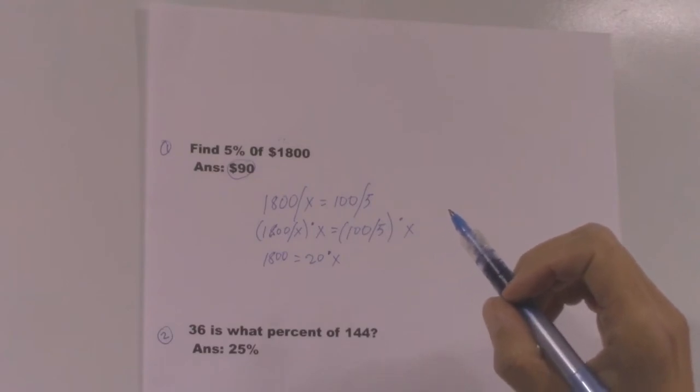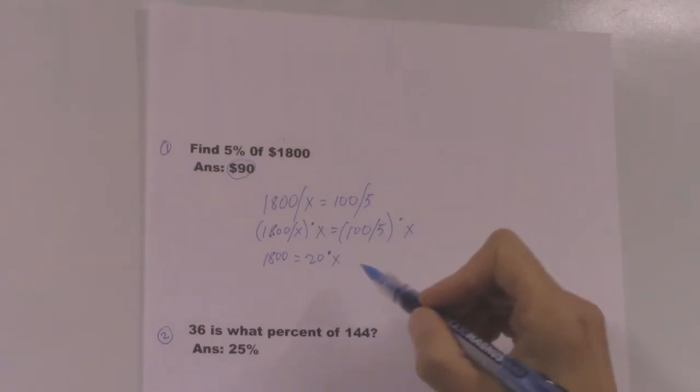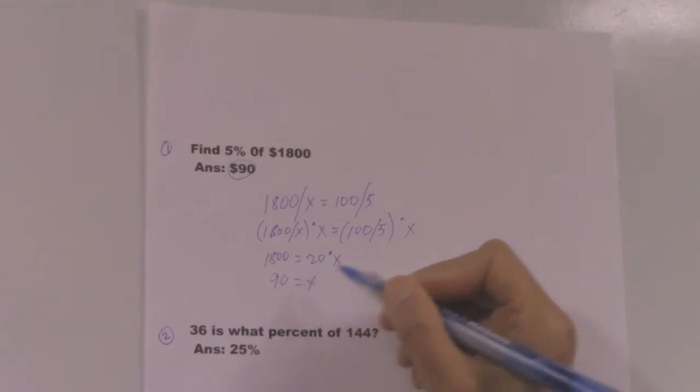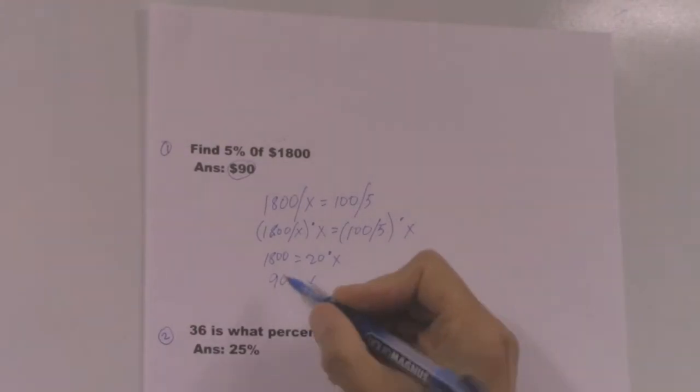Then we divide both sides of the equation by 20 to get x, to get the value of x. So the answer is 90 equals x, then x equals 90.